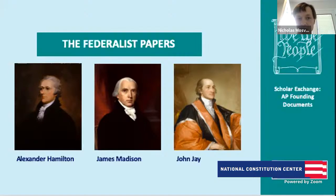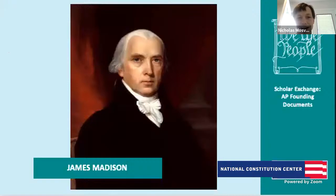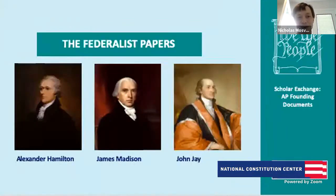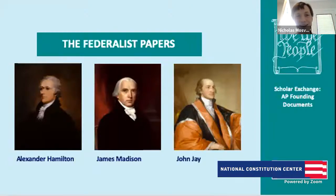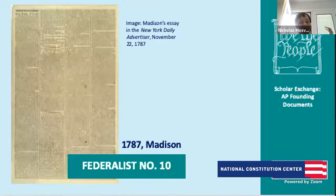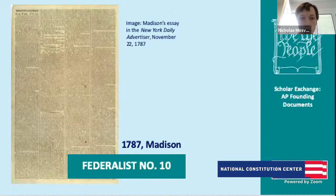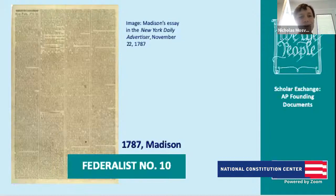That brings us to James Madison, who writes the key Federalist Papers we need to discuss. John Jay contributed but got sick and couldn't continue, so it's mostly Madison and Hamilton. A tip for the AP exam: Madison writes political theory — the big ideas and big structure. Hamilton talks about specifics — the courts, the presidency. Federalist 10 answers the big question: Anti-Federalists argue that large republics don't work, citing everyone from the Greeks and Romans to Montesquieu. Republican government has to be small and close to the people. Madison says they got it wrong.